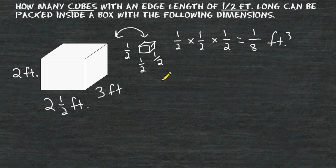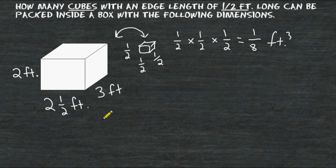Because the volume of our small cube represents one eighth of a cubic foot, it would take eight of these small cubes to equal one whole cubic foot. So what that means is we can find the volume of the box shown, and after we figure out that volume, we can multiply that answer by eight.